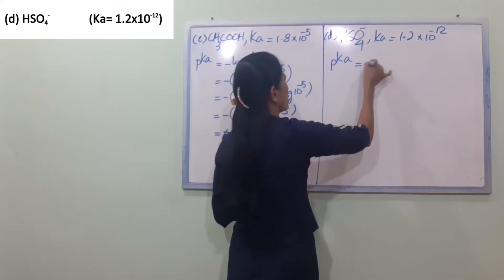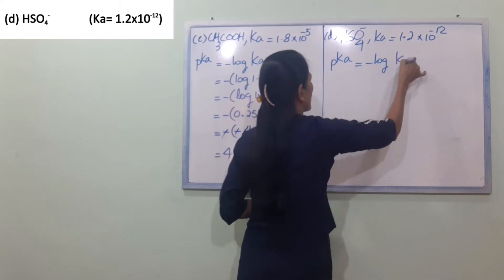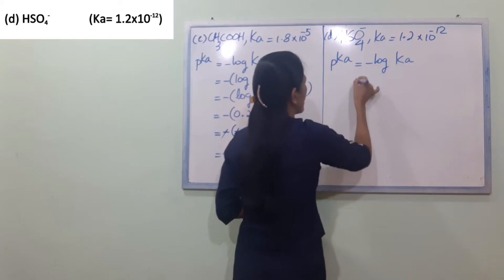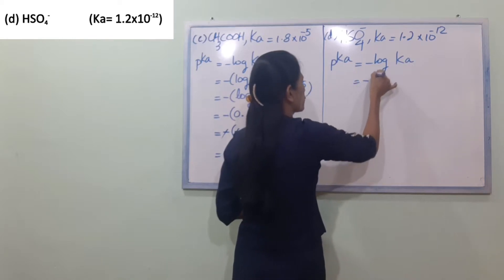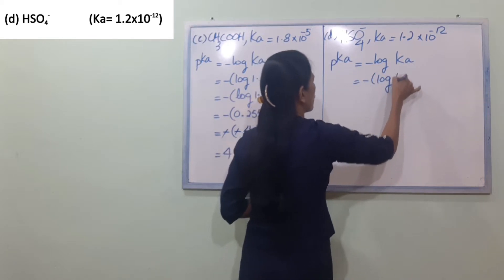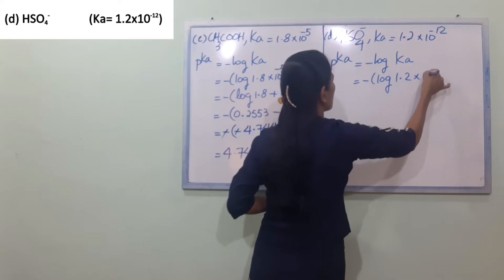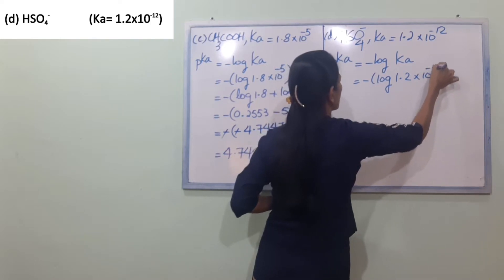PKA is equal to minus log Ka, which is minus log of 1.2 into 10 power minus 12.